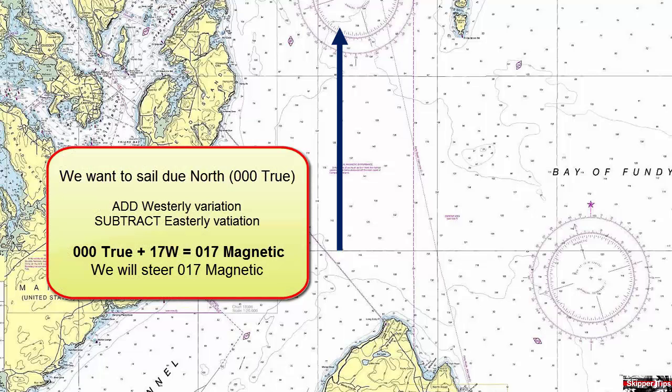The closest compass rose tells us that variation is 17 degrees west, so our base sailing course line will be 017 degrees magnetic. Now let's take a look at how the magnetic disturbance described earlier might affect our course line.